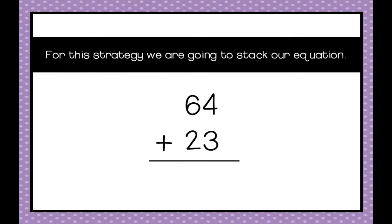For this strategy we're going to stack our equation. So normally we would look at an equation and it would all be on the same line, 64 plus 23 would all be on the same line, and sometimes I refer to that as a train. In this case we're going to look at it in a tower, so we're going to stack the 64 on top of the 23.